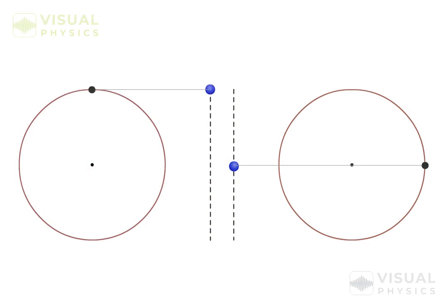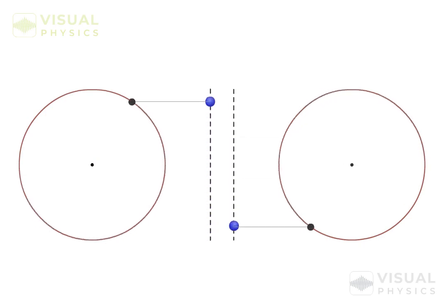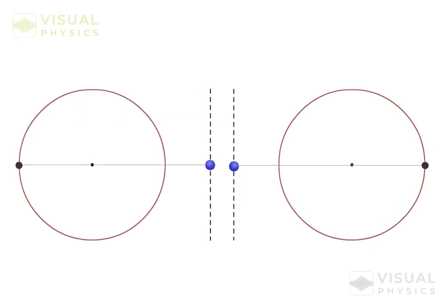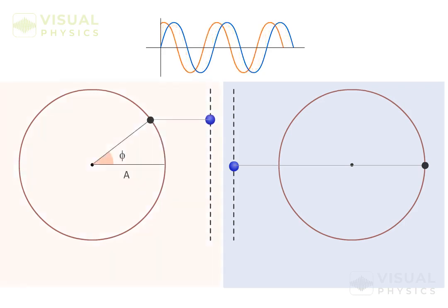Similarly, a phase difference of π will be like this. In general, the graph of an SHM that is ahead by a phase Φ can be obtained by shifting this graph towards the left.